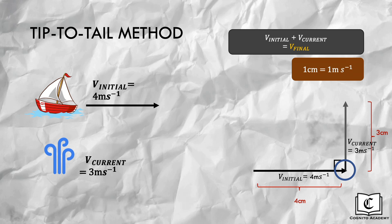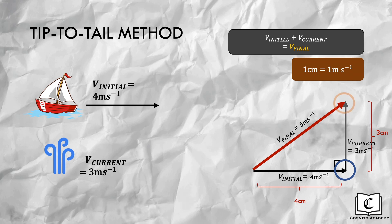Next, we draw the final velocity vector by drawing an arrow from the tail of the initial velocity vector to the tip of the water current vector. Note that for the vectors we want to add, we draw with the tip touching the tail, but for the resultant vector, we draw its tip at the tip of the vectors we want to add, and likewise for the tail.